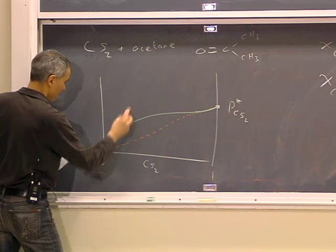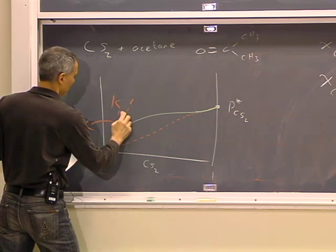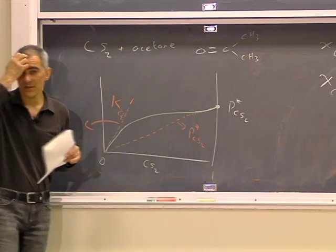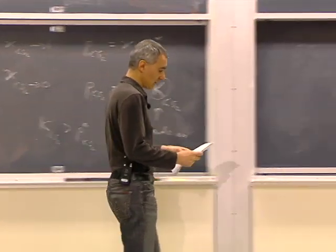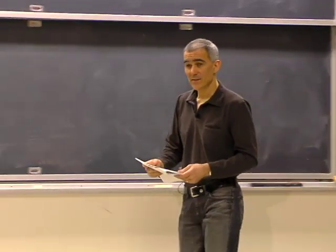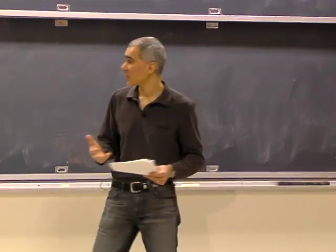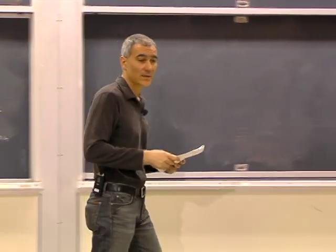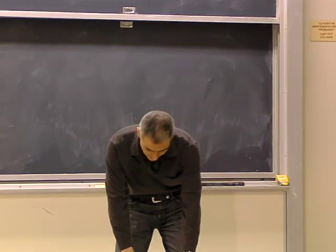The slope here is K_CS2 and the other slope is P* CS2. This is a positive deviation. You also saw an example where you mix chloroform and acetone — you get a negative deviation, because chloroform and acetone are happy together due to hydrogen bonding between the oxygen and the hydrogen in chloroform.